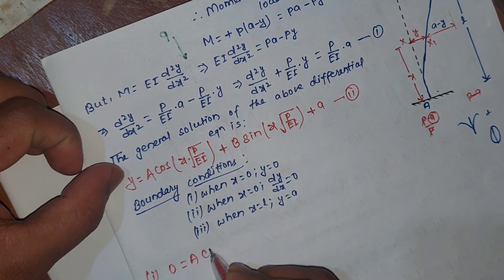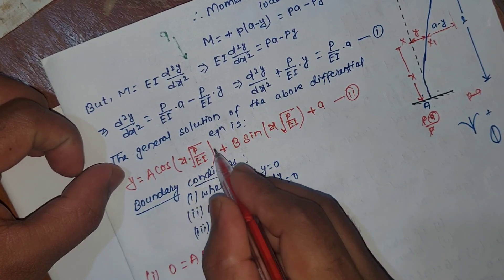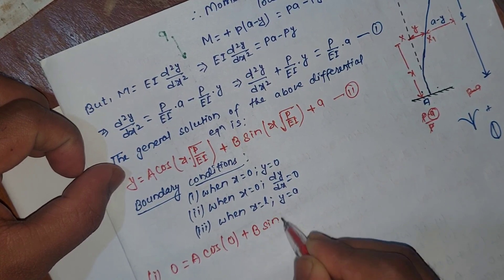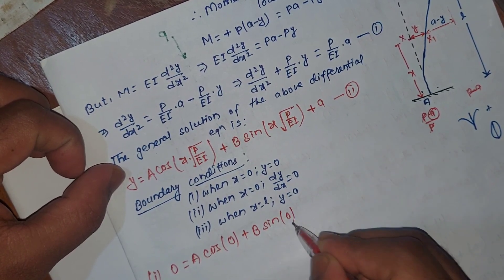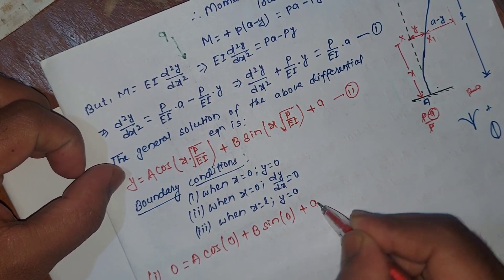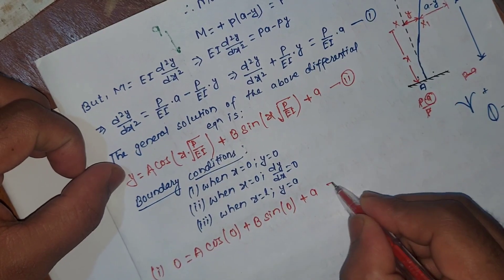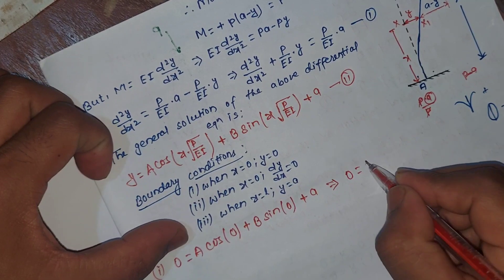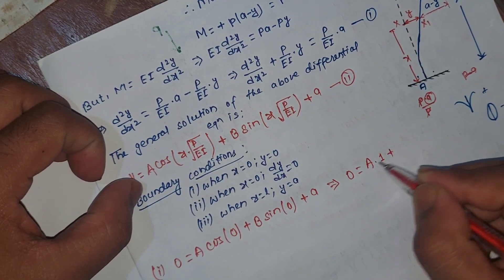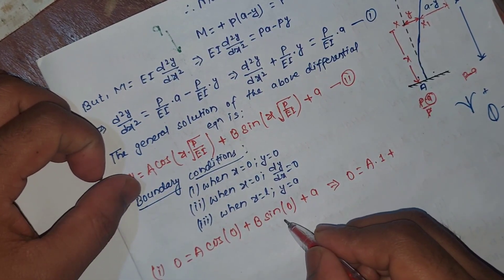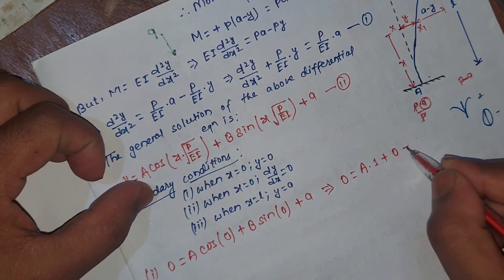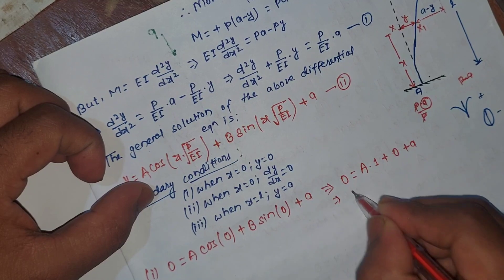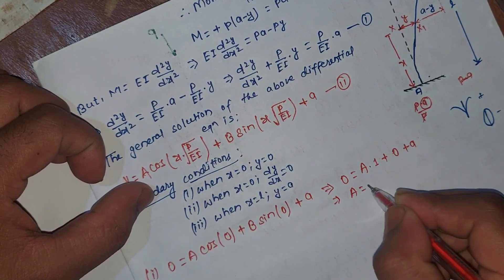Applying boundary condition 1 in the general solution: 0 is equal to A·cos(0) plus B·sin(0). Since cos(0) equals 1 and sin(0) equals 0, this gives 0 equals A plus 0, therefore A is equal to minus a — wait, this gives A equal to 0 after substituting the full solution form.